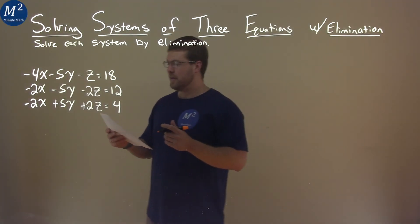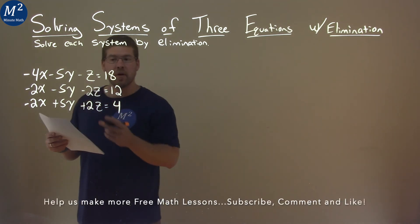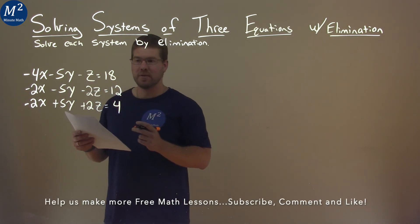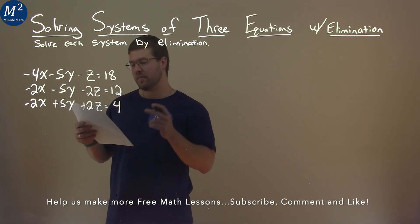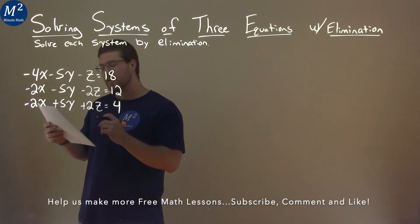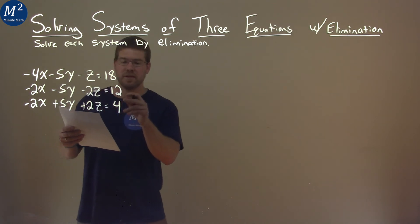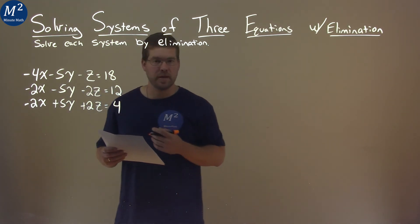We're given this problem right here. Negative 4x minus 5y minus z equals 18. Negative 2x minus 5y minus 2z equals 12. And negative 2x plus 5y plus 2z equals 4. And we need to solve this by elimination.